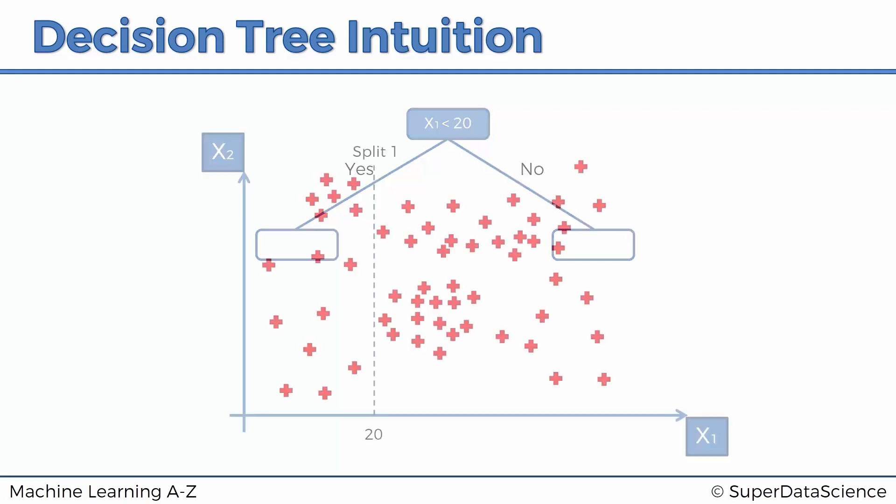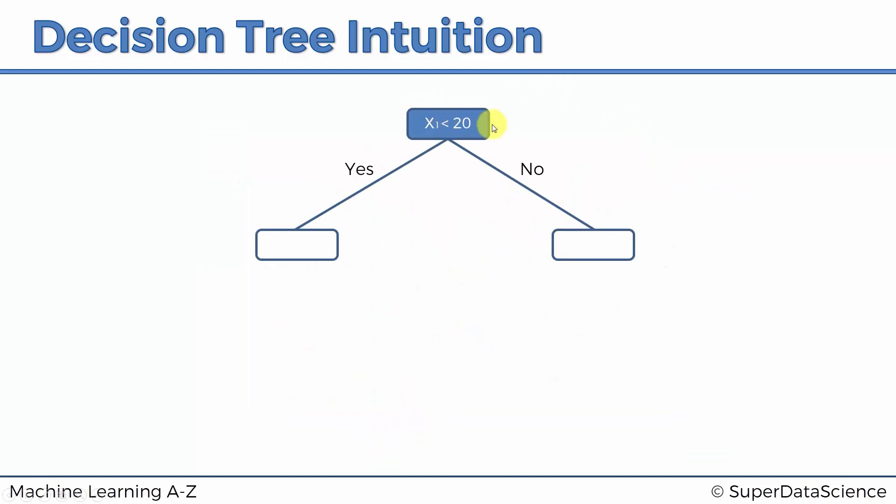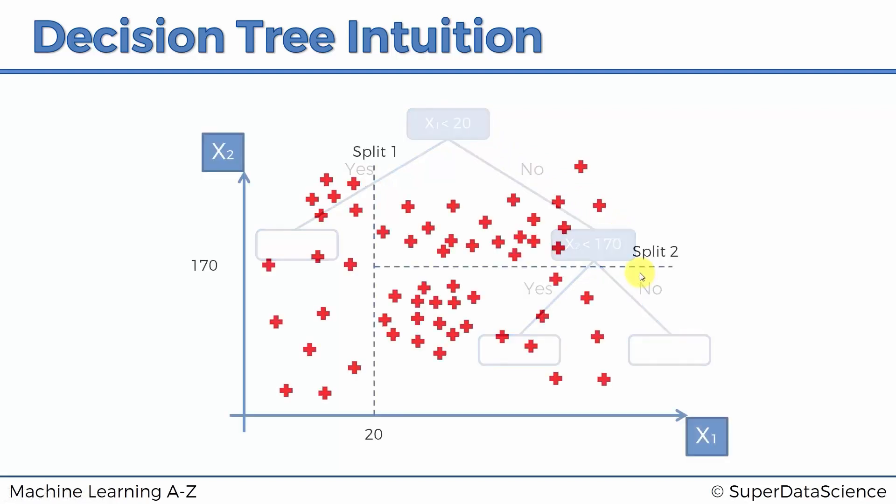Alright, so let's see what happens next. Next happens split two. Split two happens at 170 and only happens for the points that are greater than 20. So that means you would check this condition: x1 is less than 20. The answer is no, and then you check if x2 is less than 170.